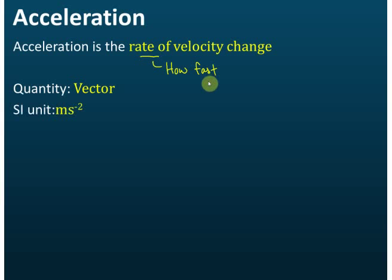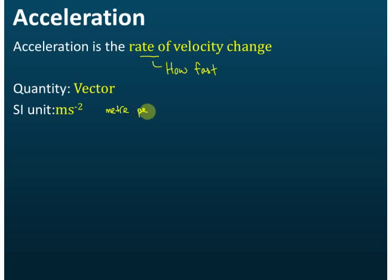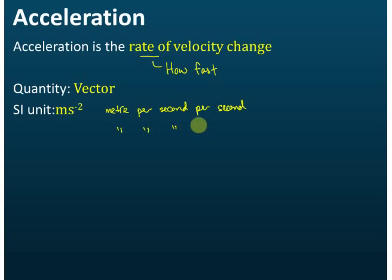The SI unit for acceleration is m/s² — read as meter per second per second, or meter per second squared.